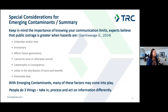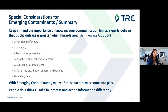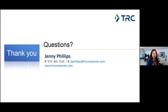I'll close with some final considerations for emerging contaminants. Keep in mind the importance of knowing your communication limits. Experts believe that public outrage is greater when hazards are unfamiliar and new, involuntary, could affect future generations, cannot be seen or otherwise sensed, are unfair in the distribution of harm and benefits, or are potentially fatal. With emerging contaminants, many of these factors come into play. People do three things: they take in, process, and act on information — and they do that differently. Hopefully these tools will help you get through presentations of risk on tough issues.